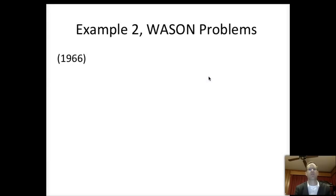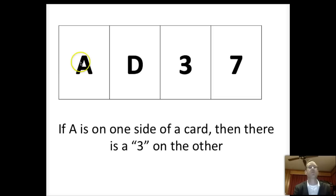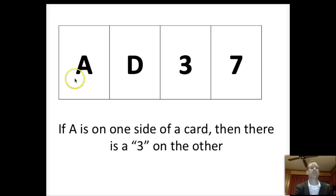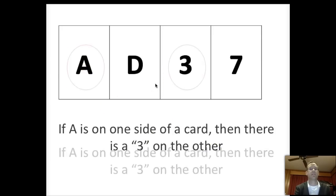Another example involves Wason problems, from research starting in the 1960s and 70s. Suppose we have four cards labeled A and D on one side, with letters on one side and numbers on the other. The rule is: if A is on one side of a card, then there is a three on the other. Which cards would you turn over to confirm or prove this rule is true?